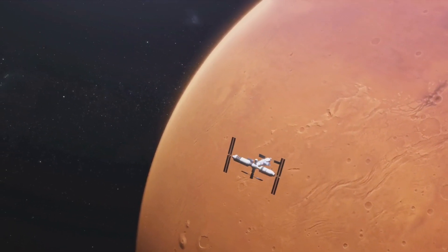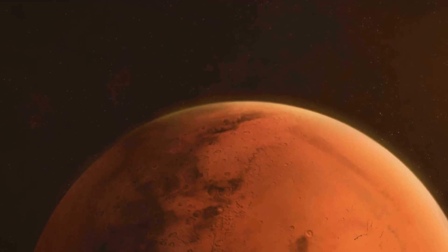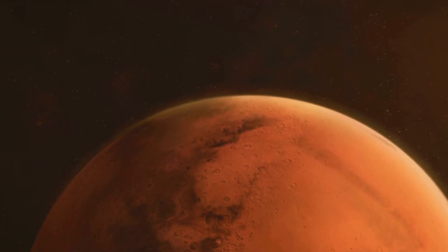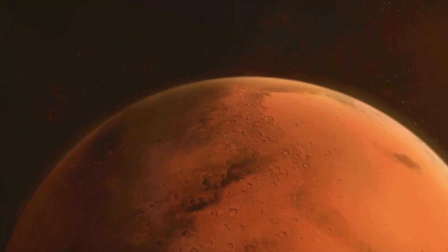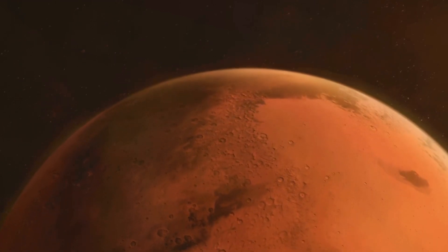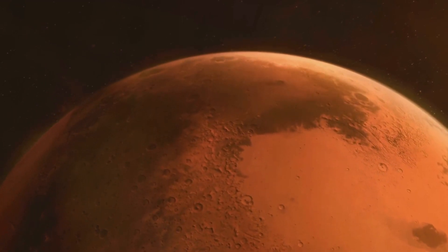Mars is significantly smaller than Earth, with about half the diameter and only about one-tenth the mass. The smaller size of Mars means it has less internal heat generated by radioactive decay and gravitational compression compared to Earth. This impacts its geological activity and ability to sustain a magnetic field.